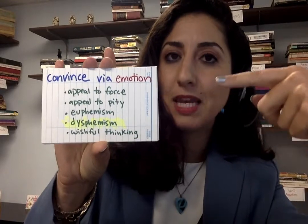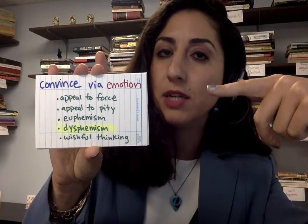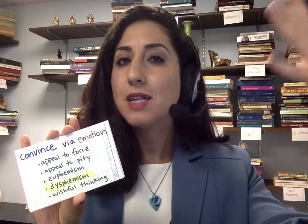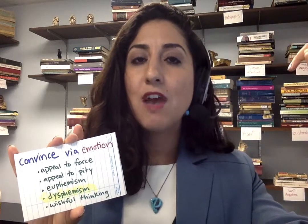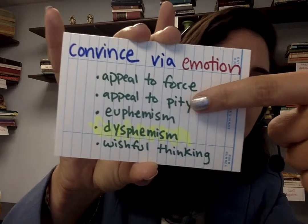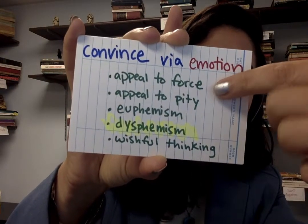When you try to convince somebody using an appeal to emotion, you're trying to get the person to agree with your conclusion by appealing to their emotions rather than giving them really good evidence. For example, if I say, "You have to do this thing or else I'm going to beat you up," I've appealed to force. Appealing to force instead of appropriate evidence is fallacious reasoning. You might get the person to accept your conclusion, but you haven't done so in an appropriate way, which makes it sloppy, fallacious reasoning.